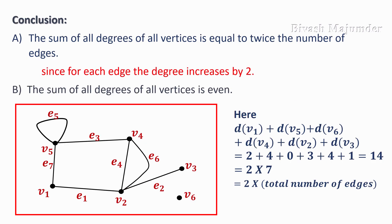Now, we can make these conclusions. The sum of all degrees of all vertices is equal to twice the number of edges, and the sum of all degrees of all vertices is even.